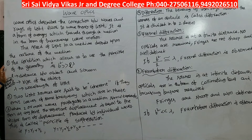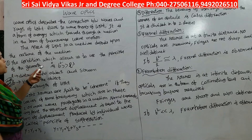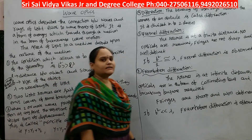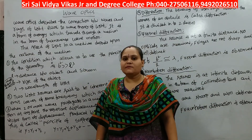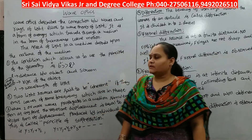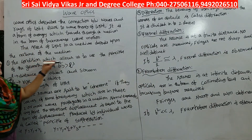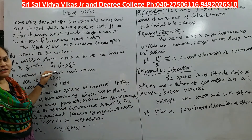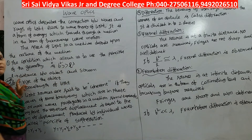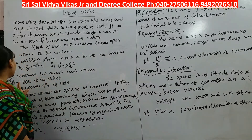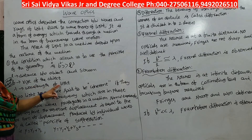The first important point is the condition which allows us to use the principles of geometry, which is b² >> lλ. Using this condition, we can describe whether light will interfere, diffract, or be polarized. Here, l is the distance between the object and the screen, b is the size of the object, and lambda is the wavelength of light.